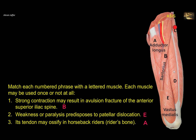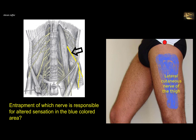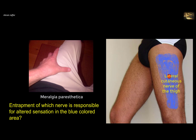C is the tensor fasciae latae and D is the rectus femoris muscle. Entrapment of which nerve is responsible for altered sensation in the blue colored area? This is the lateral side of the thigh, and the skin here is supplied by the lateral cutaneous nerve of the thigh — a branch of the lumbar plexus from L2 and L3. The nerve arises in the posterior abdominal wall, lateral to psoas major, and leaves the pelvis just medial to the anterior superior iliac spine in the angle between the bone and the inguinal ligament. It can be compressed, especially in obese people, resulting in paresthesia and tingling — pins and needles on the lateral side of the thigh. This condition is called meralgia paresthetica.